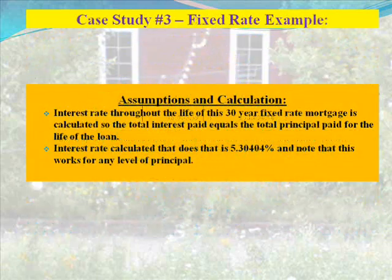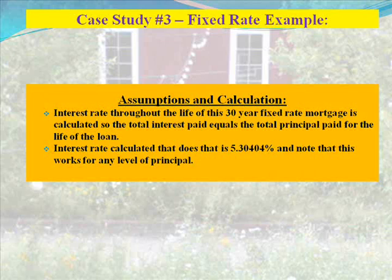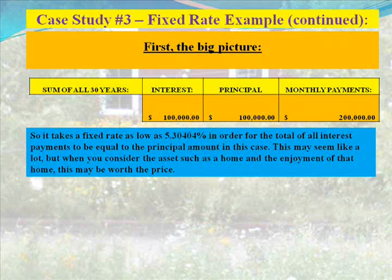Case study number three: fixed rate example. The interest rate throughout the life of this 30-year fixed rate mortgage is calculated so that the total interest paid equals the total principal paid for the life of the loan. The interest rate calculated that achieves this is 5.30404%, and note that this works for any level of principal. The sum of all 30 years' interest payments is $100,000, as mentioned in the assumptions, and the principal is, of course, $100,000, so the sum of all monthly payments for the life of this loan is $200,000. It takes a fixed rate as low as 5.30404% for the total of all interest payments to equal the principal amount in this case.